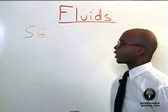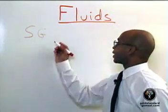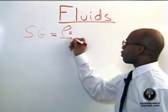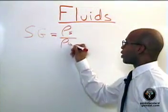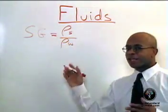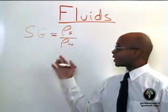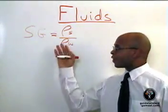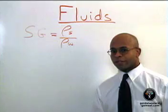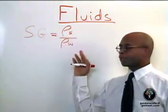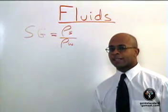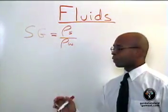The specific gravity of a substance is simply the density of that substance over the density of water. It sounds like a simple definition, but this is a commonly used concept on the exam, that of specific gravity. So it's the density of a substance over the density of water. We will see later why this concept is so important and its application is important.